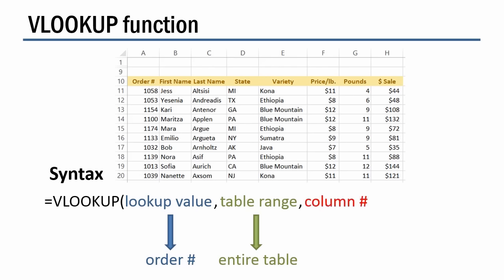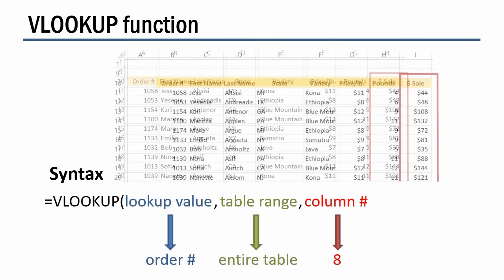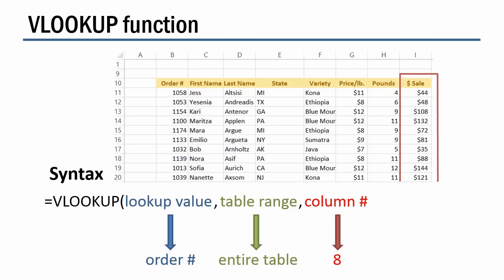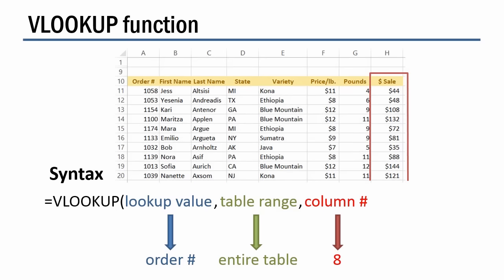Let's say we want to get the sale amount — that's the last column in this table, which is column number eight. Don't get that confused with the worksheet column letter H. There's no law that says the table has to start in column A. If we start the table in column B, the sale column is still the eighth column of the table, but it would be in worksheet column I instead of H. So we refer to the actual column number within the data table, not the worksheet column. After the column number, put in a comma, and then that optional argument at the end is true or false.